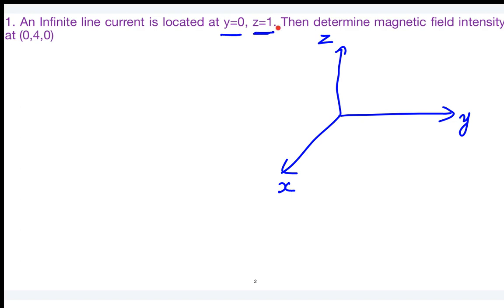The value z=1 means the line is parallel to the x-axis and parallel to the xy-plane at a distance of 1 meter. So the infinite line current is elevated 1 meter from the ground plane. This is how that line current looks in the diagram.